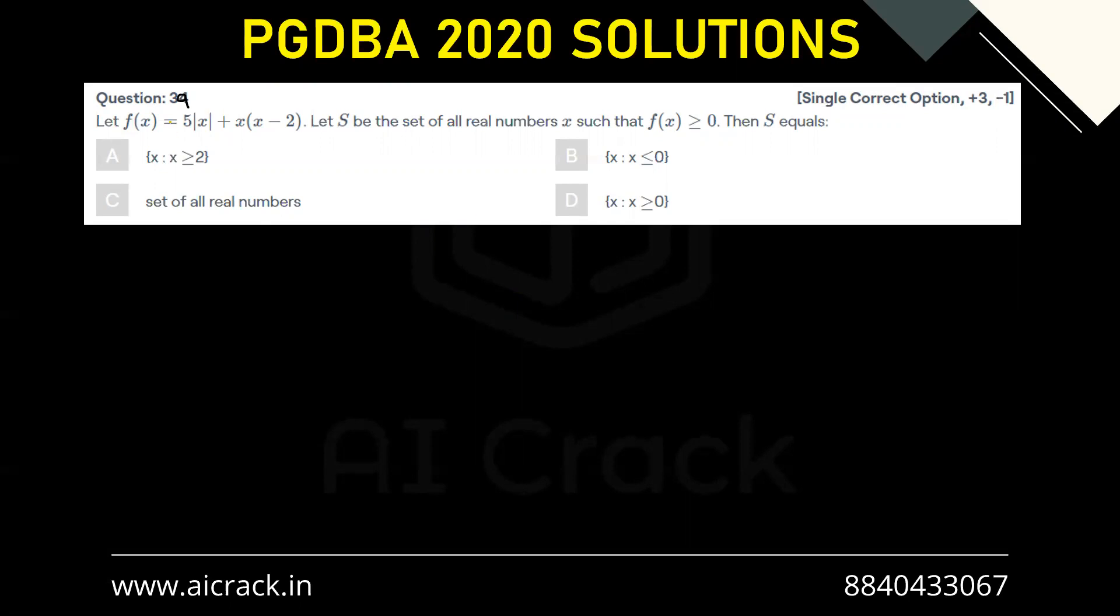Hi everyone, let's solve question number 39. Let f(x) = 5|x| + x(x - 2). Let S be the set of all real numbers x such that f(x) ≥ 0. Then S equals...